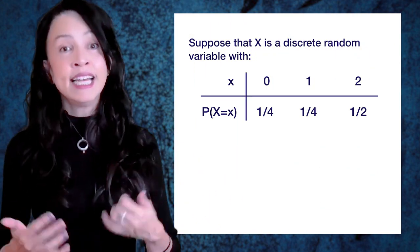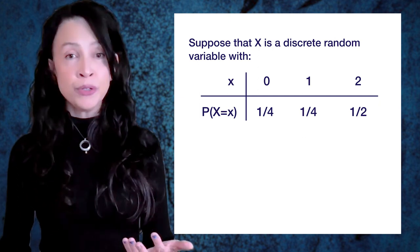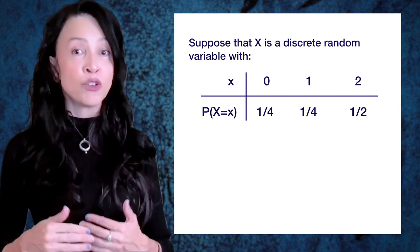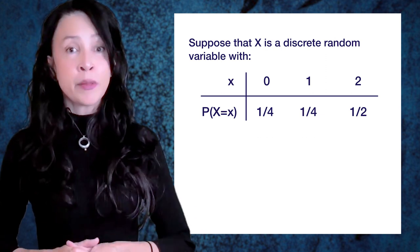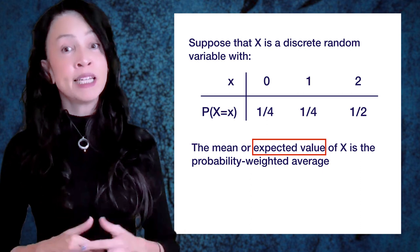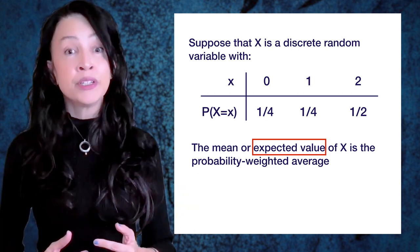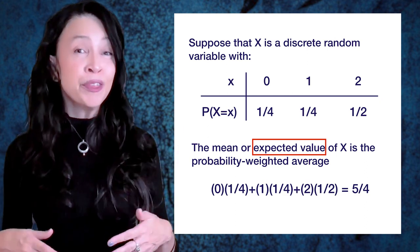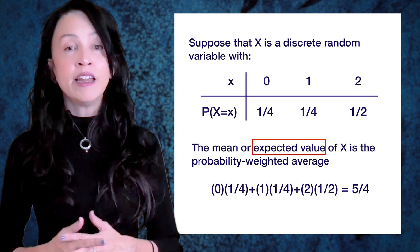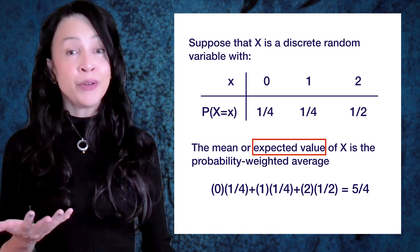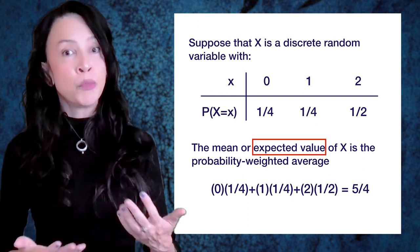I'm going to call it capital X. It takes on values little x, where little x could be 0, 1, or 2. And the probability that X is 0, 1, or 2 is 1/4, 1/4, and 1/2, respectively. Now the mean, or expected value, or expectation of X is the probability weighted average of these values. So I'm going to take 0 times 1/4 plus 1 times 1/4 plus 2 times 1/2, and we get 5/4. This is like an average of the values 0, 1, and 2, but it weights the higher probability values more.